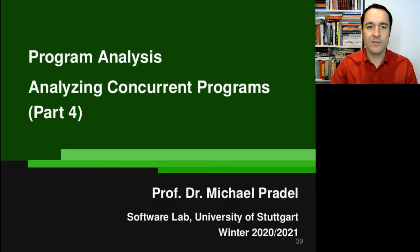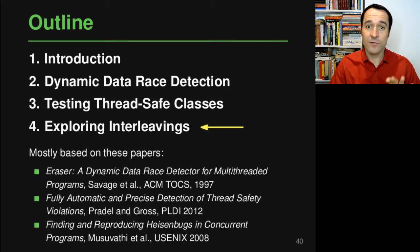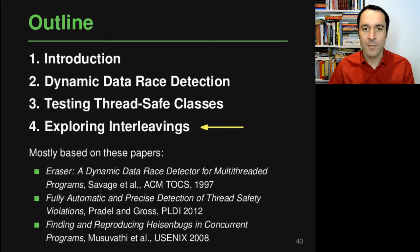Hello and welcome back to program analysis. In this fourth and last video of this lecture on analyzing concurrent programs, we will look into exploring different interleavings that the execution of a program may trigger. This is a problem that is orthogonal to the problems in the previous videos, where we were always assuming that we somehow triggered the right interleaving when executing the program. Now we will look at one approach for hopefully triggering the right interleaving a little faster.